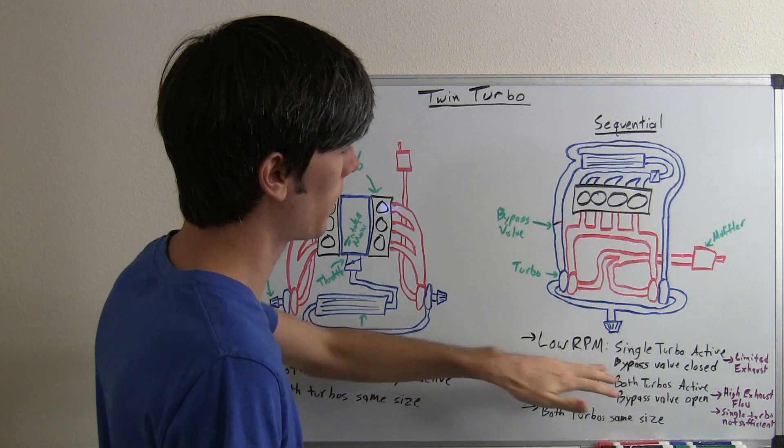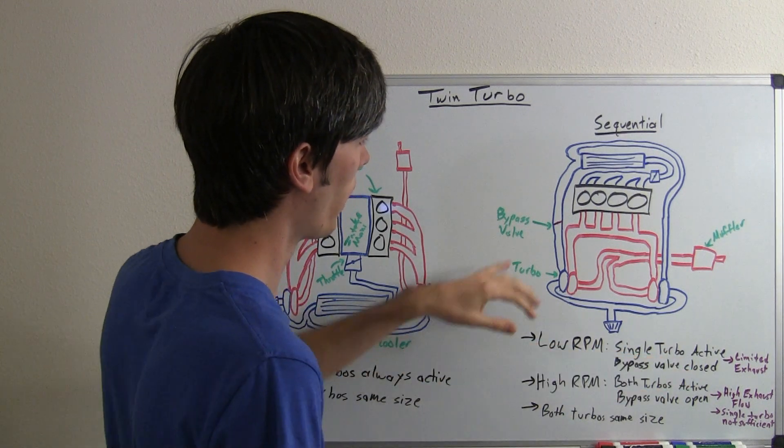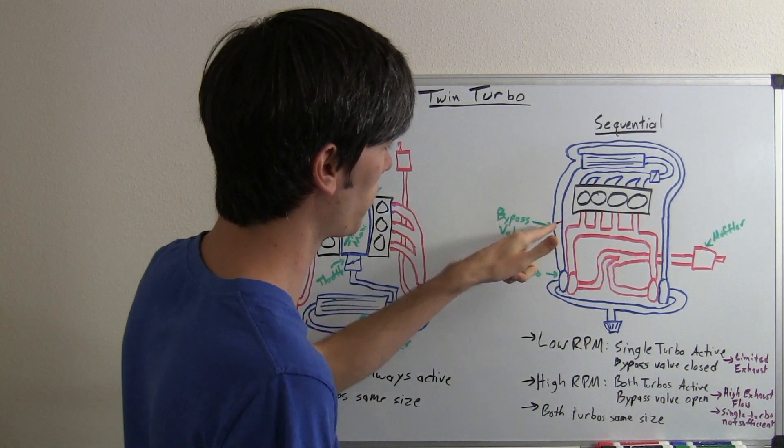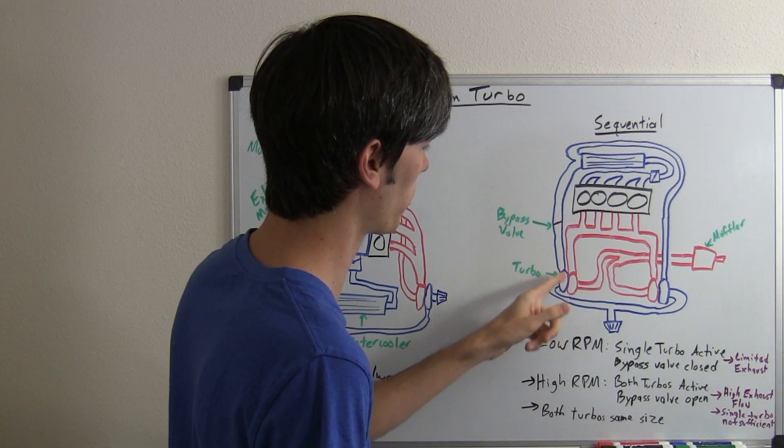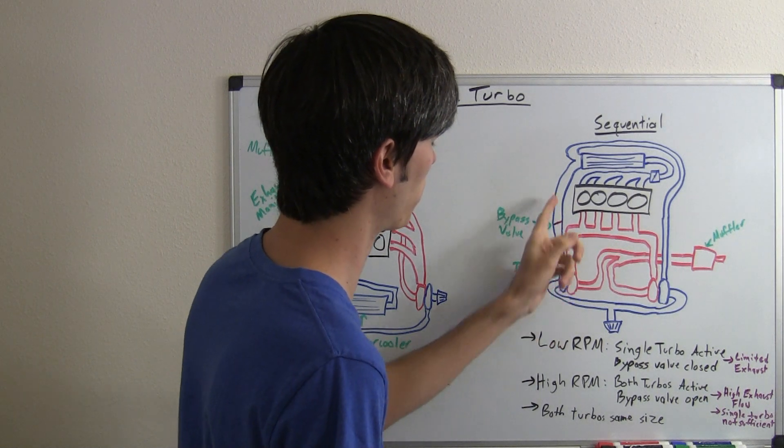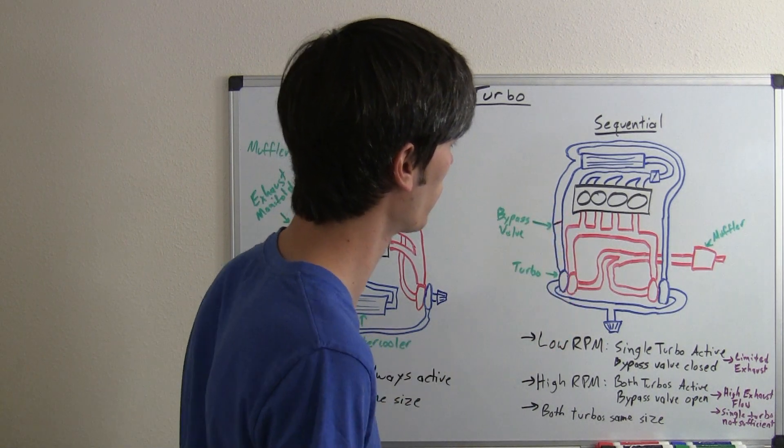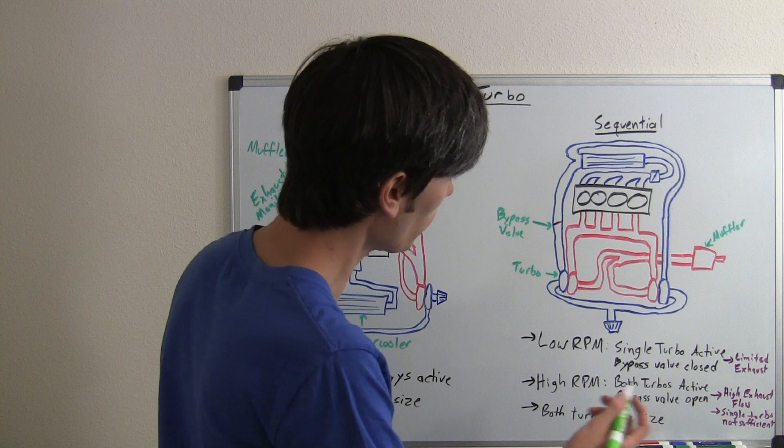So, at low RPM, you've only got a single turbo active. And here we have a bypass valve, and this is basically what shuts off this turbo. So, if air isn't allowed to pass through here, it's not going to be able to spool up, and it's not going to be able to put any boost through this piping.